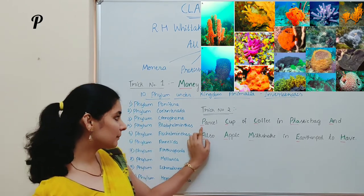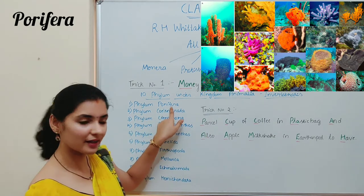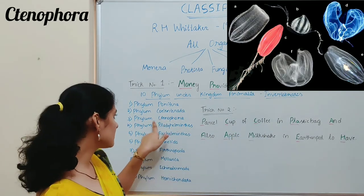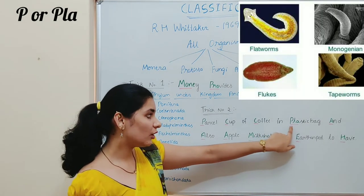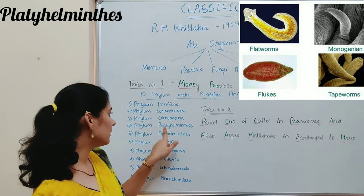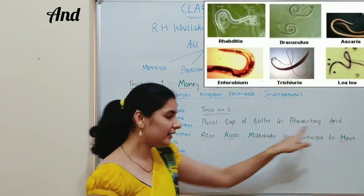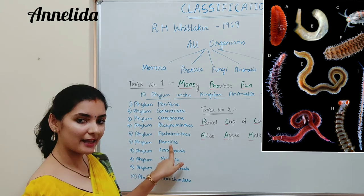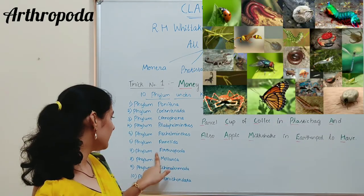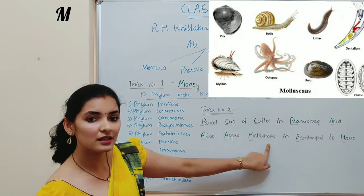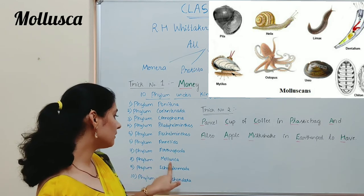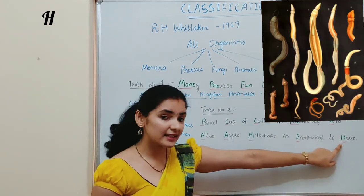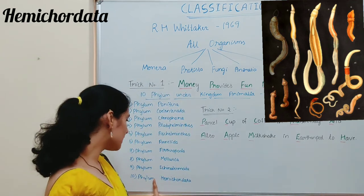For example, the letter P from 'parcel' represents phylum Porifera. The letter C from 'cup' represents Cnidaria. The letter C from 'coffee' represents phylum Ctenophora. PLA from 'plastic bag' represents phylum Platyhelminthes. The letter A from 'and' depicts Aschelminthes. The letter A from 'also' represents phylum Annelida. The letter A from 'apple' depicts phylum Arthropoda. The letter M from 'milkshake' represents phylum Mollusca. The letter E from 'earthen pot' stands for phylum Echinodermata. The letter H from 'have' represents phylum Hemichordata.